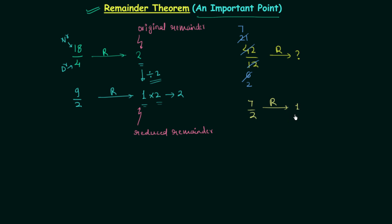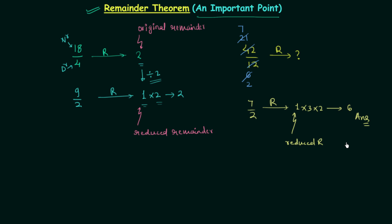But this remainder of 1 is the reduced remainder — this is not the original remainder. To obtain the original remainder, we multiply 1 by 3 because we divided both 21 and 6 by 3. But this is still the reduced remainder because we also divided 42 and 12 by 2, so we multiply by 2 again. Therefore the original remainder is 1 × 3 × 2 = 6. That is the answer.